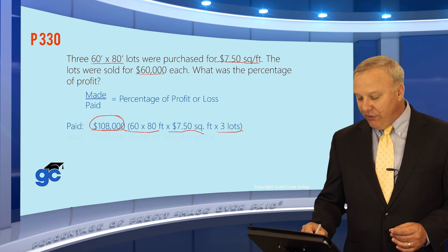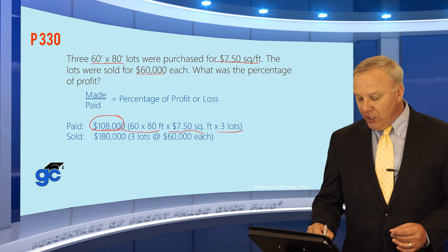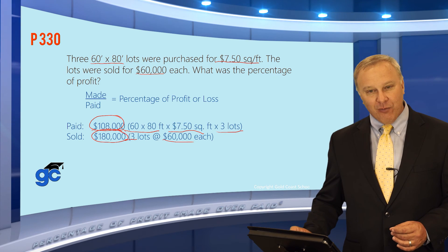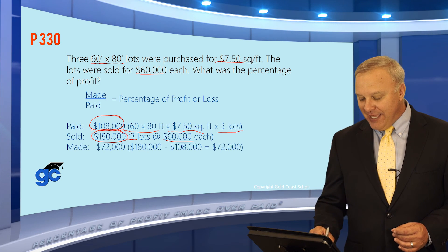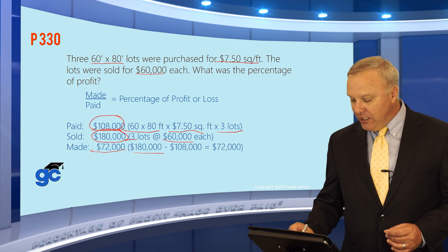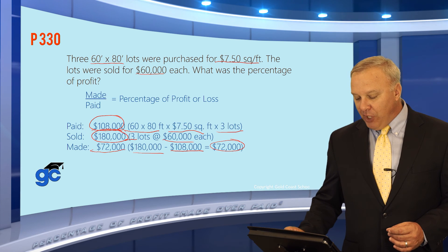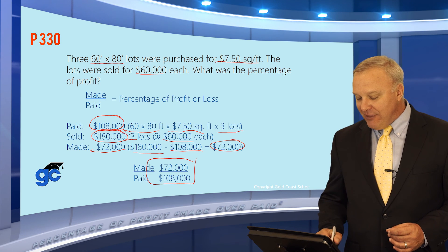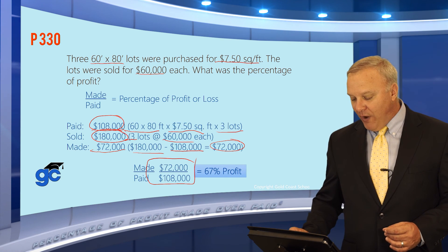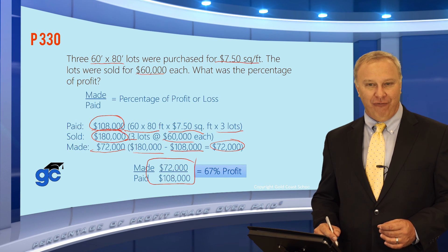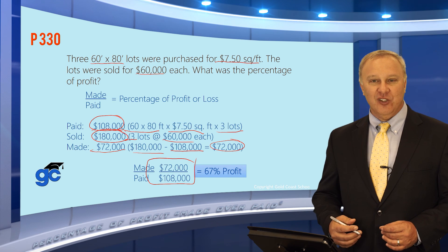They sold three lots for $60,000 each, so three times $60,000 gives us a sales price of $180,000. If we subtract the purchase price from the sales price, we find that they made a $72,000 profit — $180,000 minus $108,000 gives us $72,000. Plug this into your made over paid formula: $72,000 divided by $108,000 tells us that these people incurred a 67% profit when they did this subdivision and sold these lots.